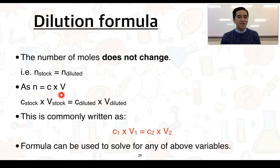We can therefore say that the concentration times the volume of the stock solution we transferred is equal to the concentration and volume of our diluted solution. This is normally written as c1 × V1 = c2 × V2. We can use this formula to solve for any of the above variables.